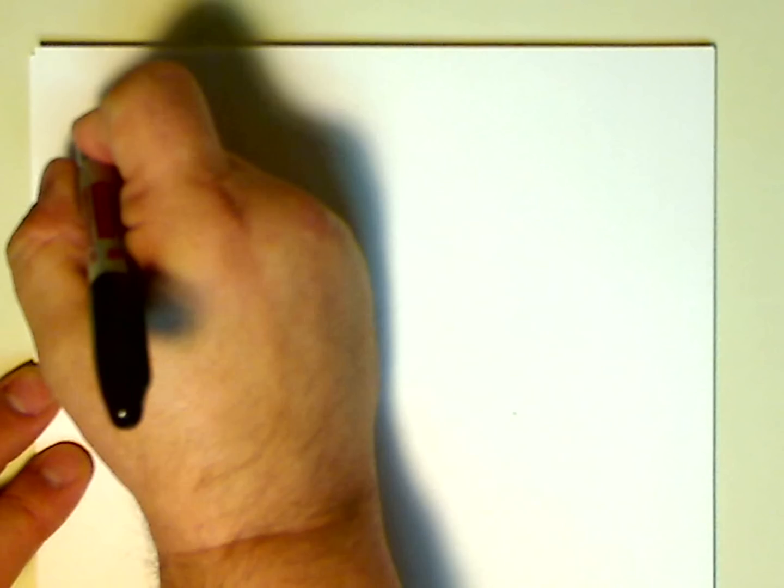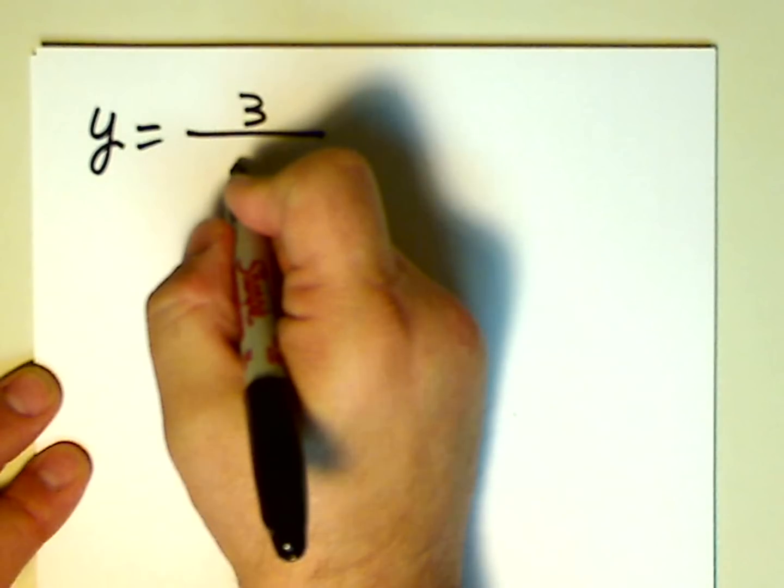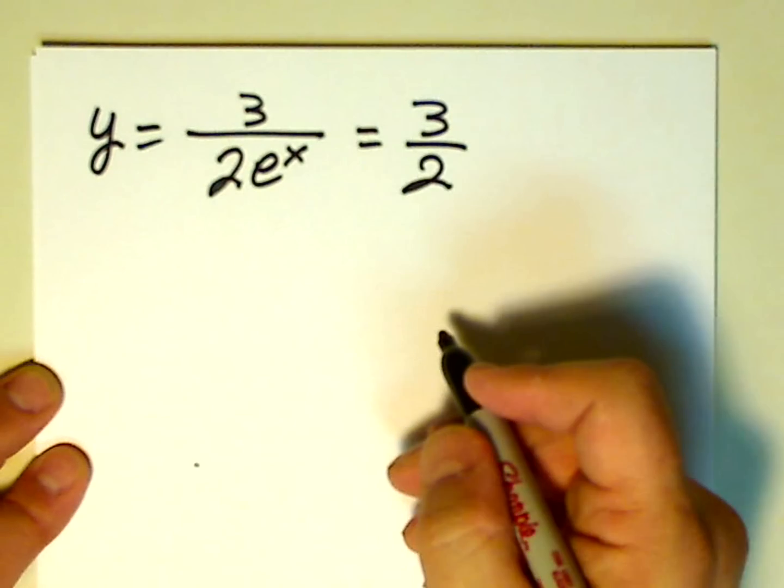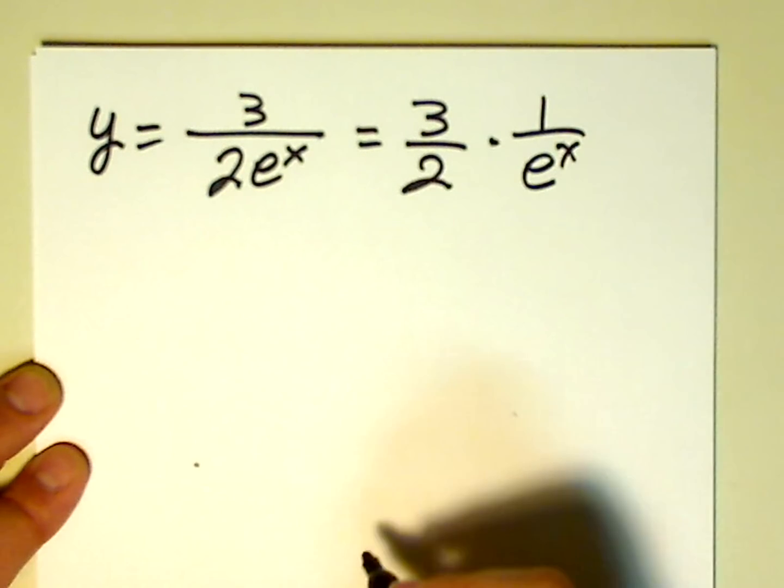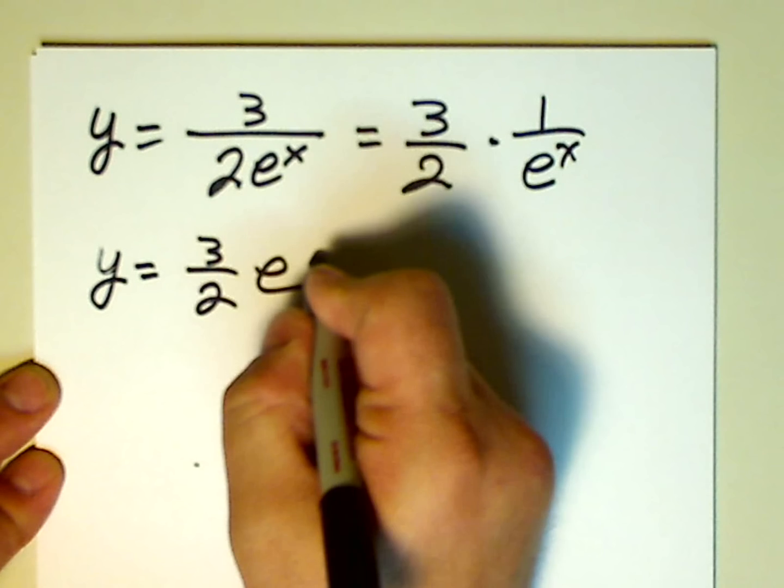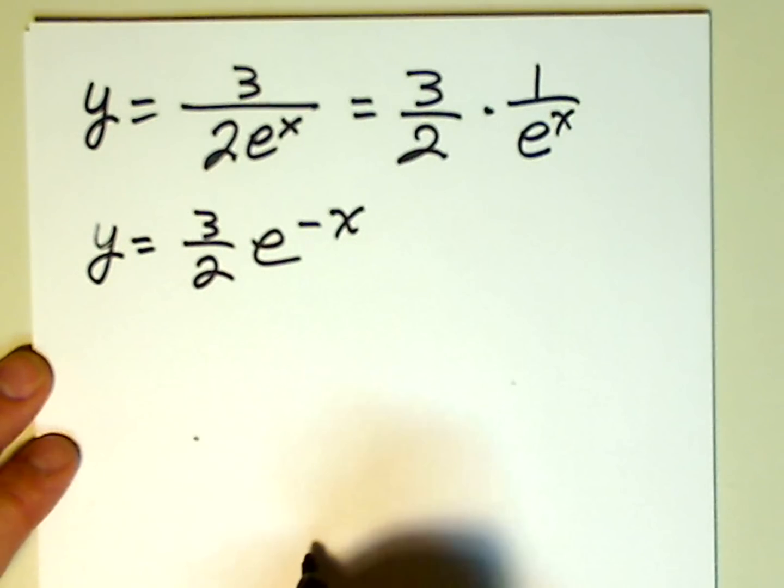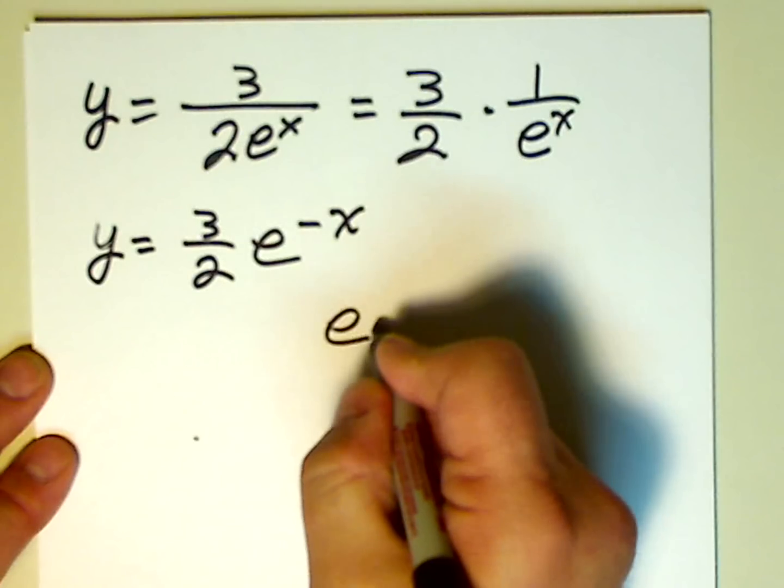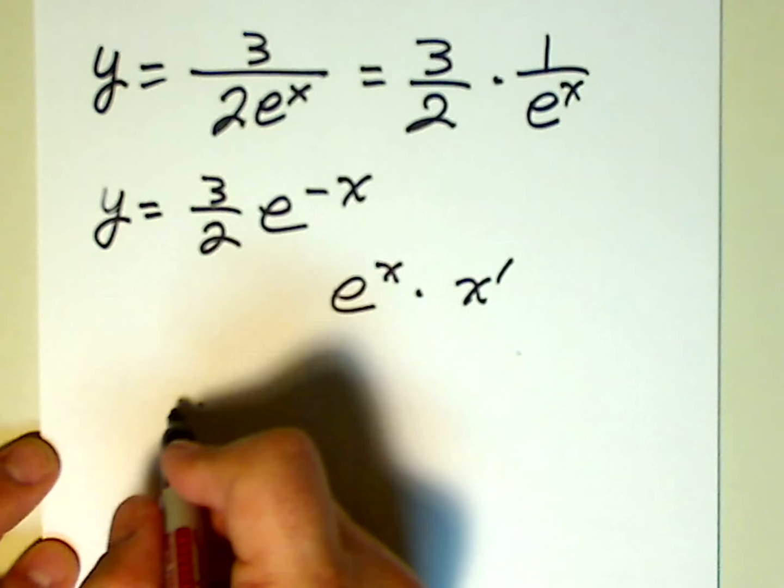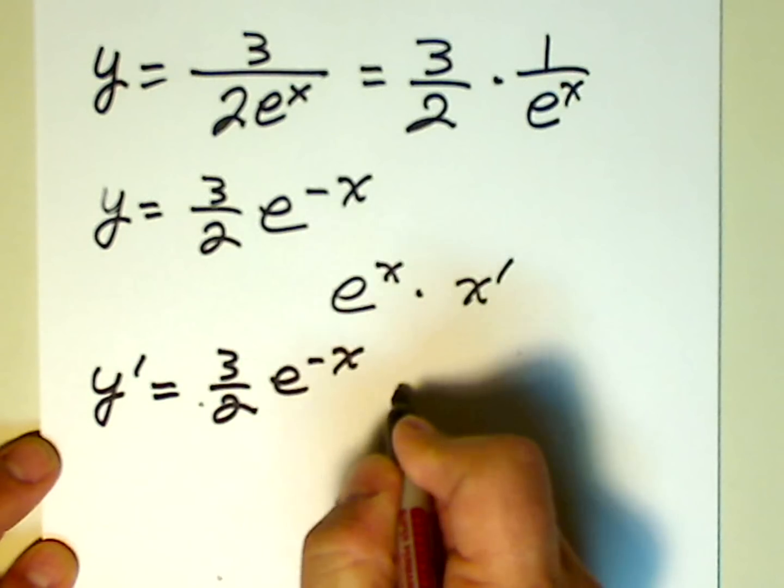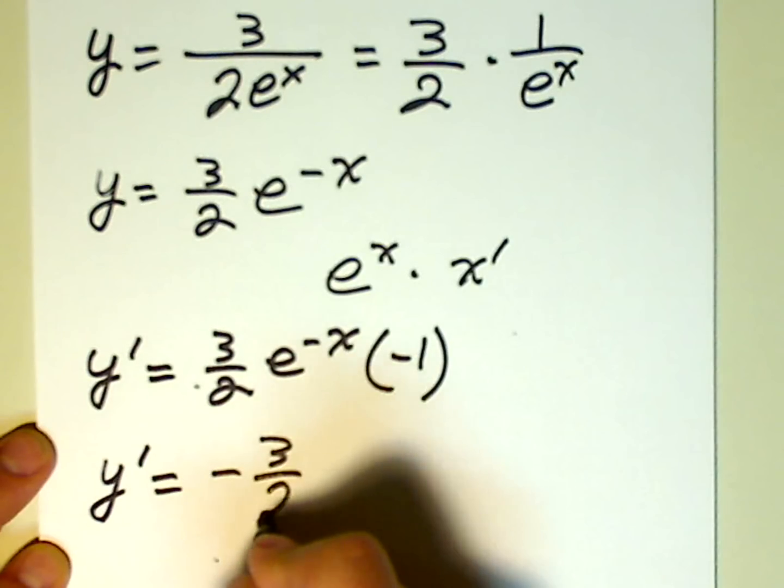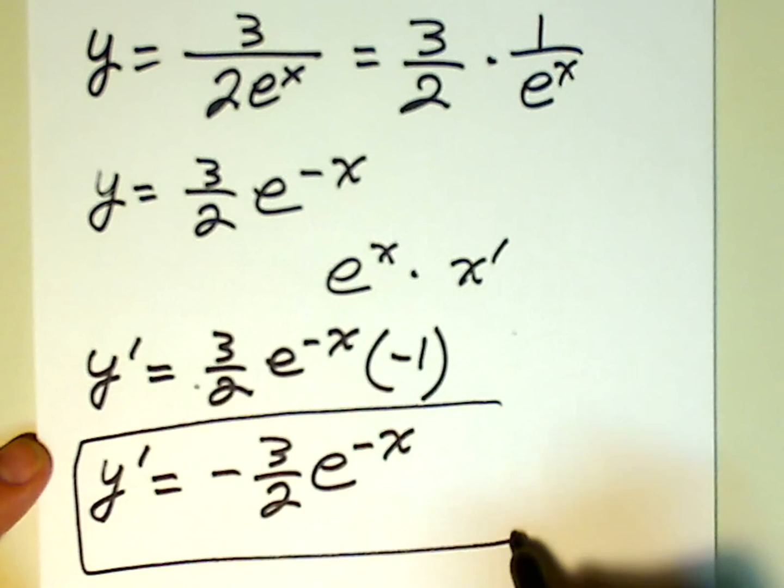Let me work one more problem here with the number e. How about y equals 3 over 2e to the x. Okay, so this can be rewritten the same way we've been doing it. We take out the 3 halves. We multiply it by 1 over e to the x. And then we're going to kick this e to the x out of the denominator. So y is equal to 3 halves e to the negative x. So now it just becomes similar to before, e to the x times x prime. So y prime is equal to 3 halves e to the negative x times negative 1, the derivative of negative x. So y prime is equal to negative 3 over 2e to the negative x. And there's our derivative.